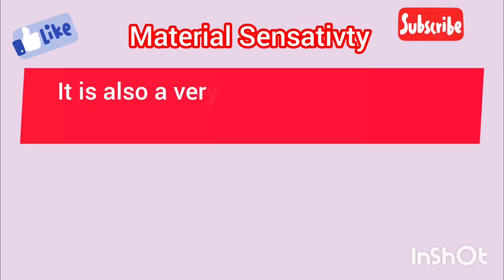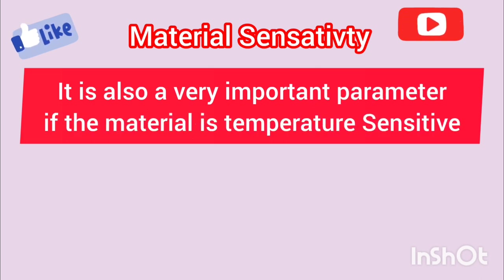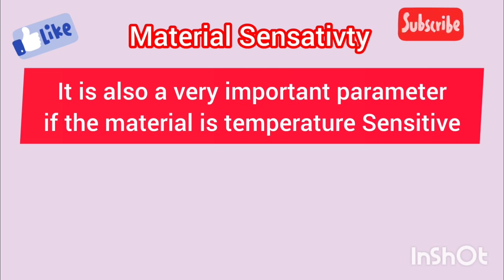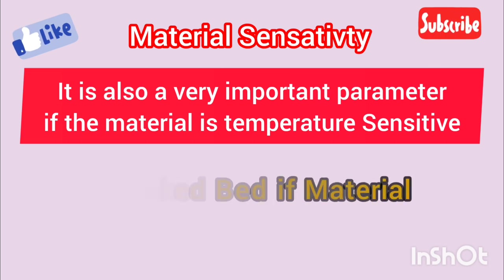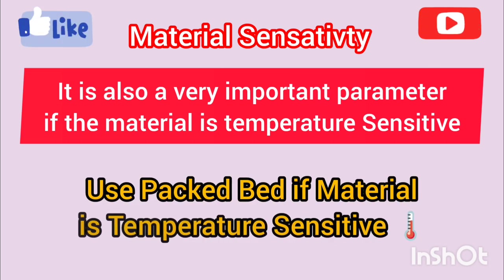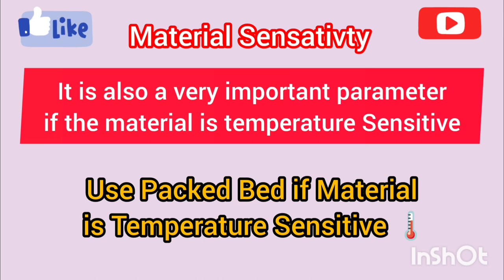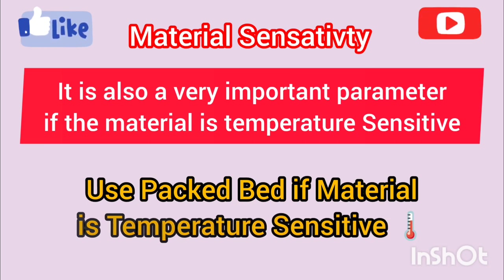Material sensitivity is the third parameter. For heat-sensitive materials, gentle handling is essential. Packed columns have distinct advantages here due to their low liquid holdup, which reduces the risk of thermal degradation. Tray columns, with their higher liquid holdup, may not be the best choice for heat-sensitive material. In short, if material is temperature sensitive, use backbed column; otherwise, you can use tray column.